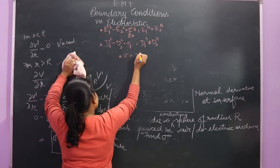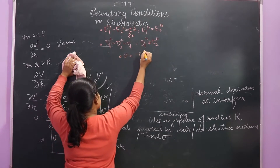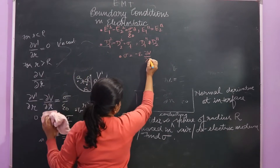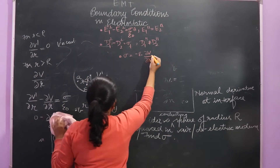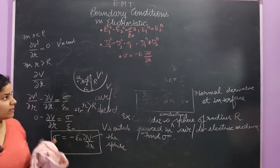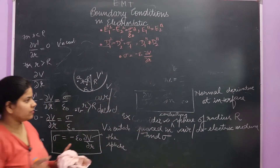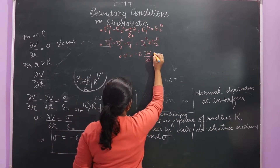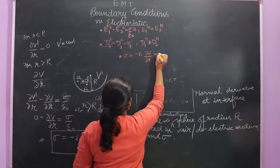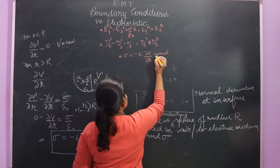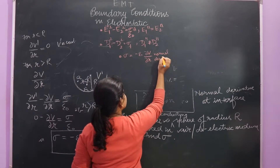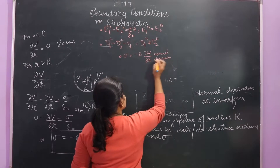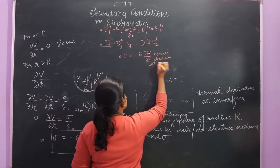σ equals −ε₀ · del V/del r, or del V/del z — whichever is the normal derivative at the interface. This is the normal derivative at the interface.